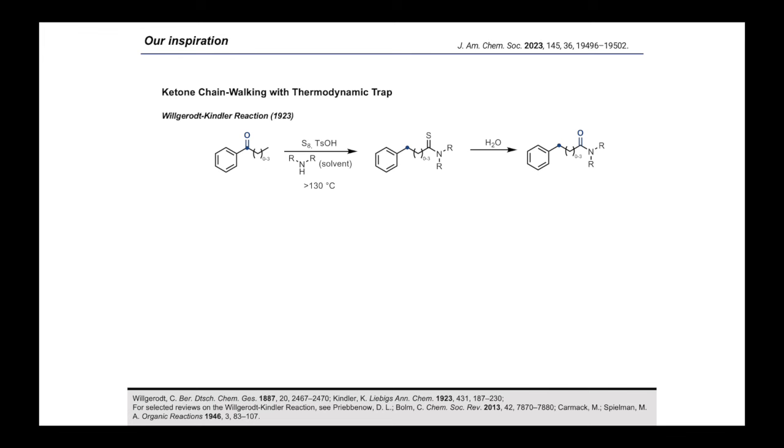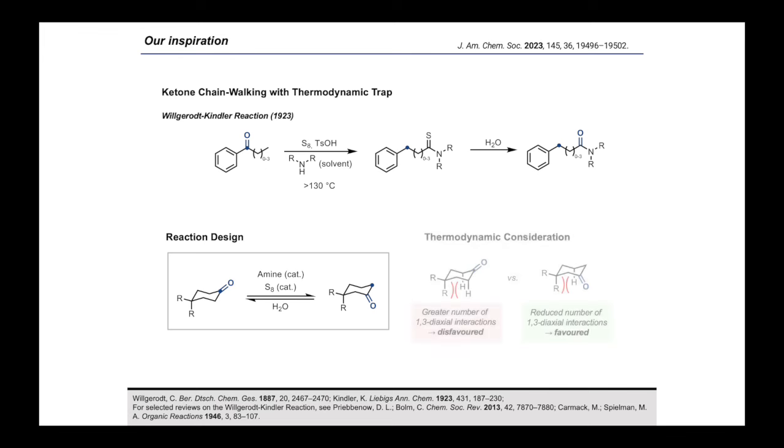Reports show that the carbonyl can migrate over longer carbon chains as well, implying that a carbonyl chainwalking mechanism might be operative. These reports led us to three key hypotheses. First, subjecting cyclic ketones to these reaction conditions could remove the thermodynamic trap imposed by the thioamide, potentially enabling a reversible ketone chainwalking reaction. Second, we considered the possibility of employing sulfur and secondary amine in catalytic amounts for the same reasons. Finally, we were conscious that, as the reaction would be reversible, a suitable driving force to favor product formation would be necessary.